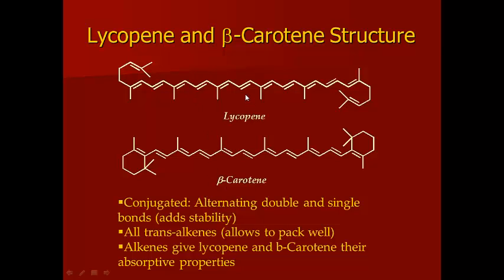If you look at the two structures, you can see that they're both related. Beta-carotene has a six-membered ring that's closed up at the end of this chain. For lycopene, the six-membered ring is not closed up. But you can see that these two compounds have the same backbone of alternating double and single bonds.